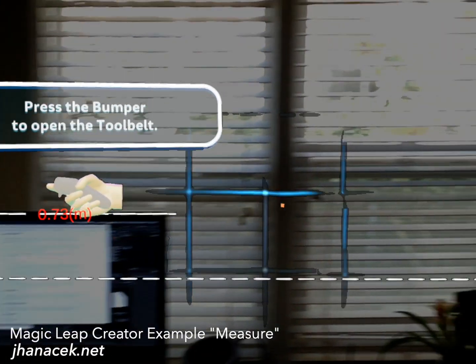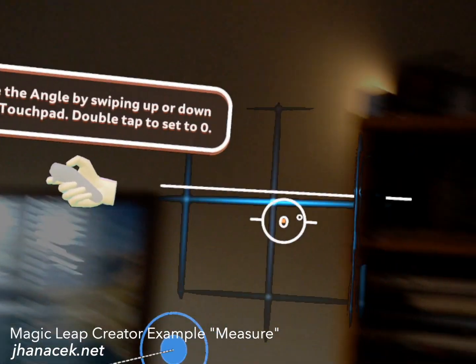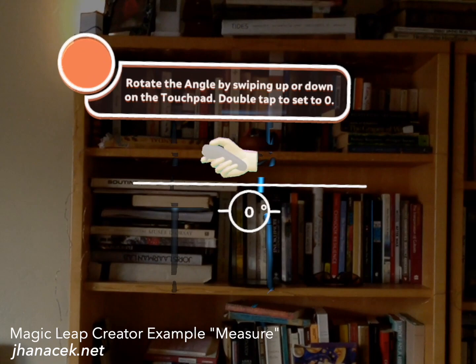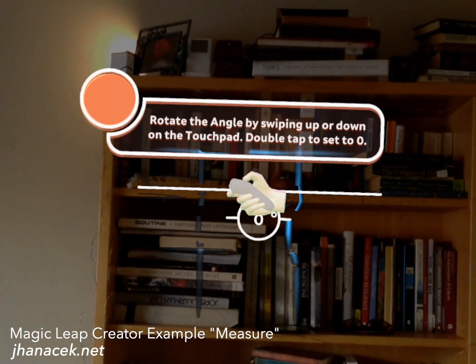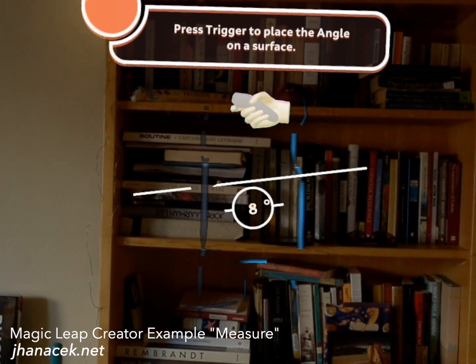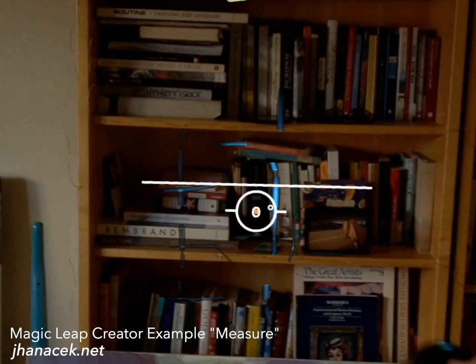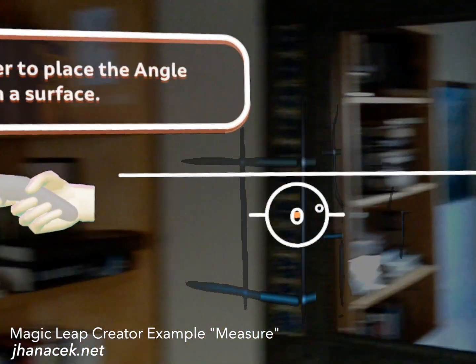And we also got one more - we got an angle. So I can see, is this bookshelf actually level? Double tap to set it to zero. Let's see. So you move it. Oh, different angle. Double tap.